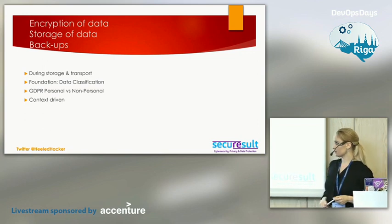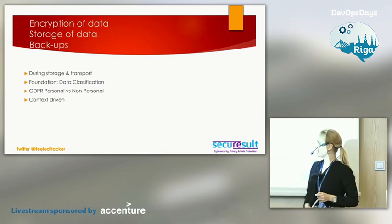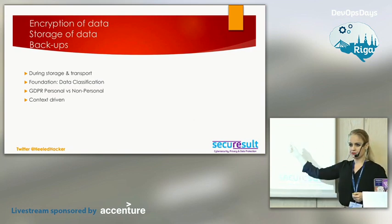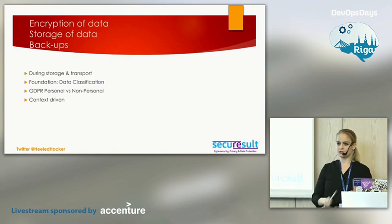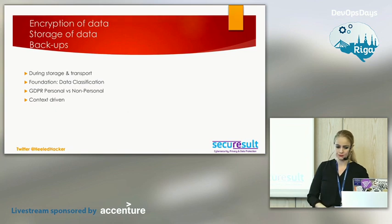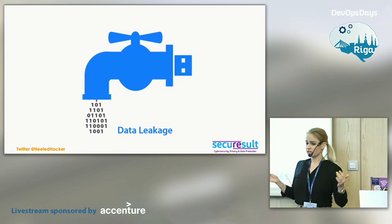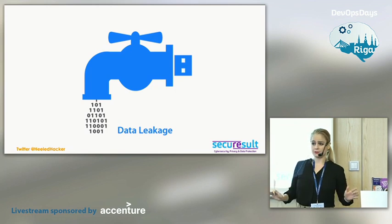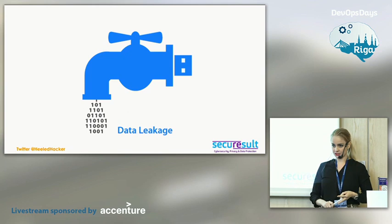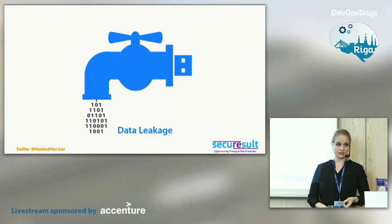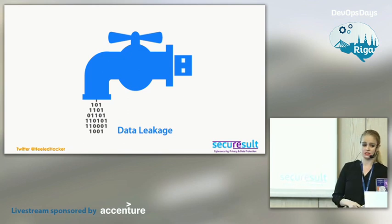The same goes for encryption. The foundation is data classification — make the difference between personal and non-personal, because you need to encrypt your personal data. Another trend we see right now and expect a lot from in the future is data leakage: the prevention and detection of data leakage. So we could also test your company's SIEM or Syslog, for instance.